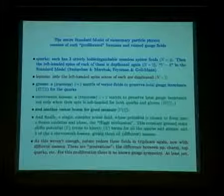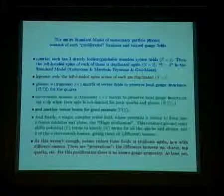The entire standard model of elementary particle physics consists of what I would call the proliferated fermions and related gauge fields. It's not usually written this way. Normally, what we get is that particle data group table, or something that looks like a Rubik's cube. But let's think about it this way. First of all, we start with the quarks. Each quark, when we talk about it, U, D, S, T, each has three utterly indistinguishable massless spinor fields. That's where this N equals three comes from in the standard model. These are the color fields. Then, the left-handed spins in each of these is again duplicated. That's where the N equals two comes from.